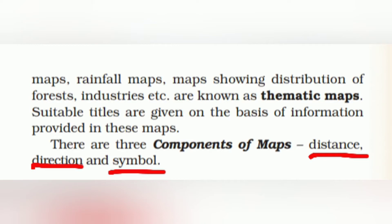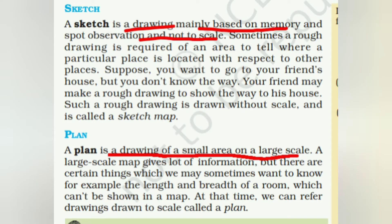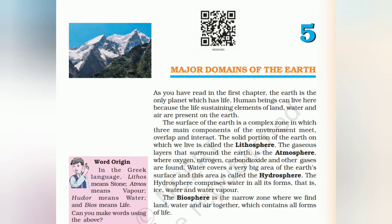Symbols are used instead of actual shapes or sizes, which can't be practically drawn. A sketch is a drawing based on memory — not precisely correct. A plan is a drawing of a small area on a large scale, providing a detailed representation. That concludes Chapter 4.